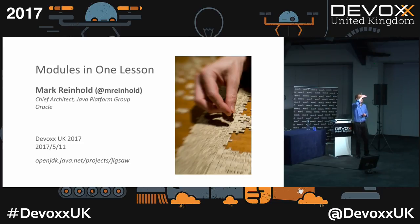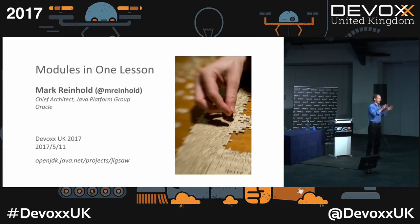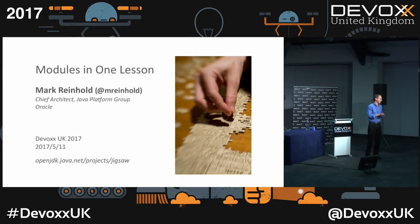Follow-up on versioning: you cannot specify a version in a module declaration. You can have one version of a module in any particular layer. If you really need to load different versions of things, you can spin up layers to do that — the API is quite simple. If you're doing a plugin architecture or something like an application server, you can load different versions. But for now we've left that to the API, and it didn't make sense from an adoption standpoint to bake versioning in at this time.